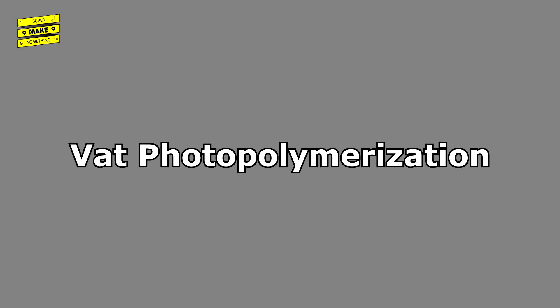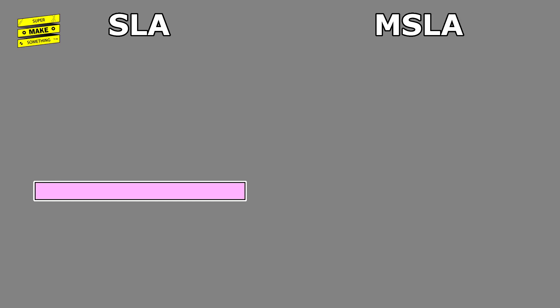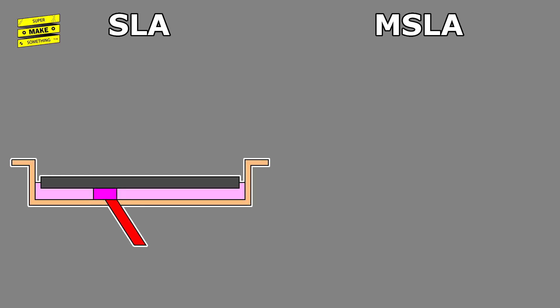The two most popular VAT photopolymerization printers for makers today either use a process called stereolithography, also known as SLA, or masked stereolithography, also known as MSLA. In an SLA approach, a liquid, photosensitive polymer sits in a reservoir or VAT of a 3D printer along with a print bed. A laser is focused on various places on the bottom of the VAT's surface, selectively hardening material to create each layer.